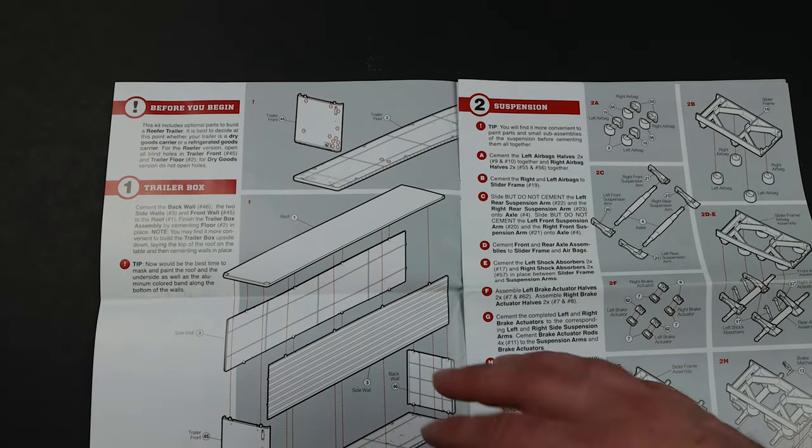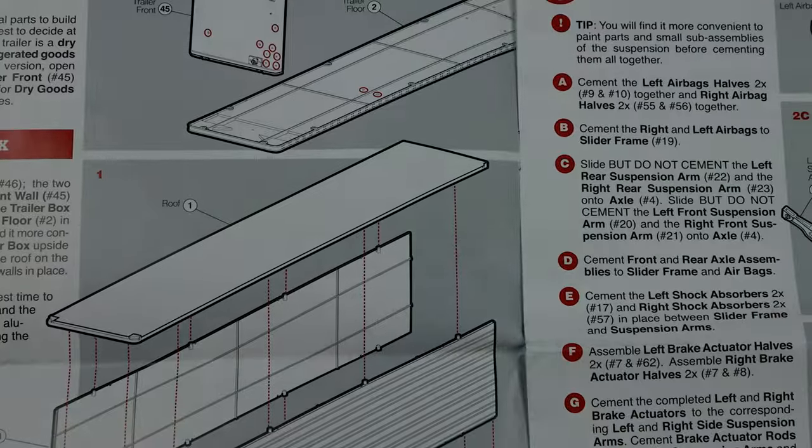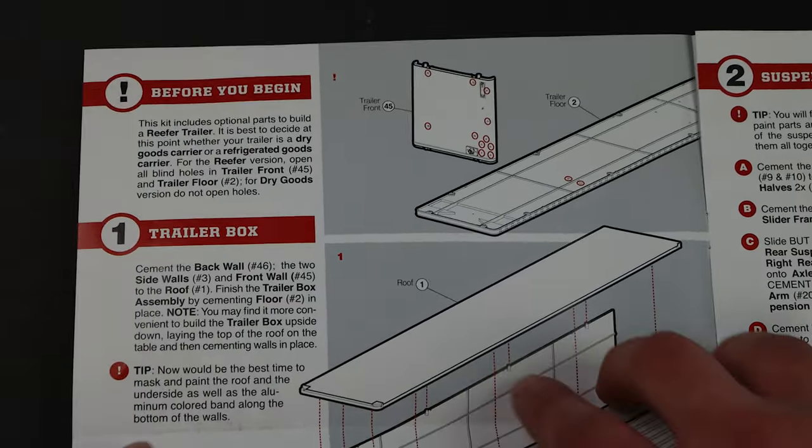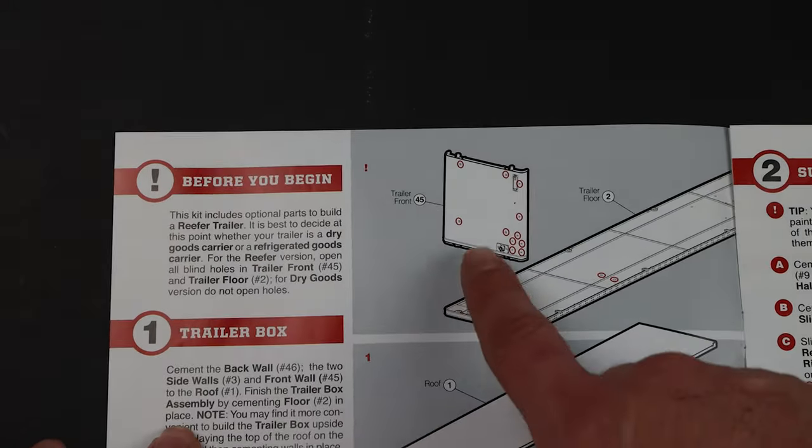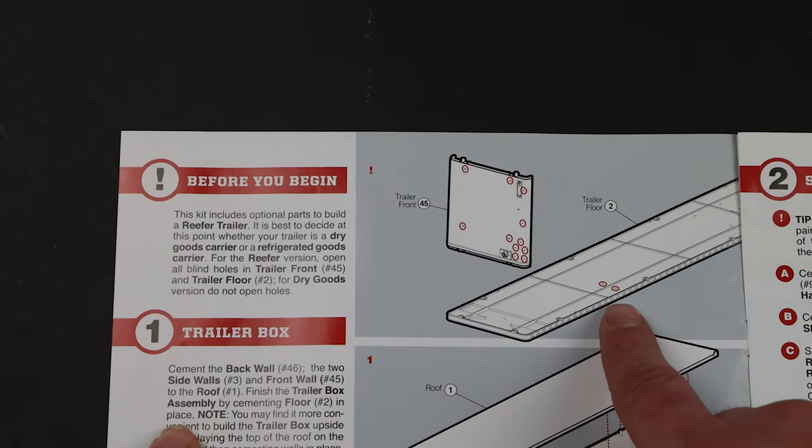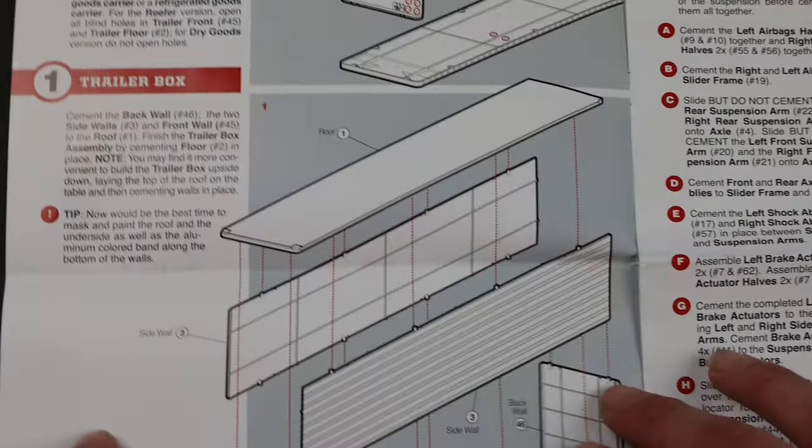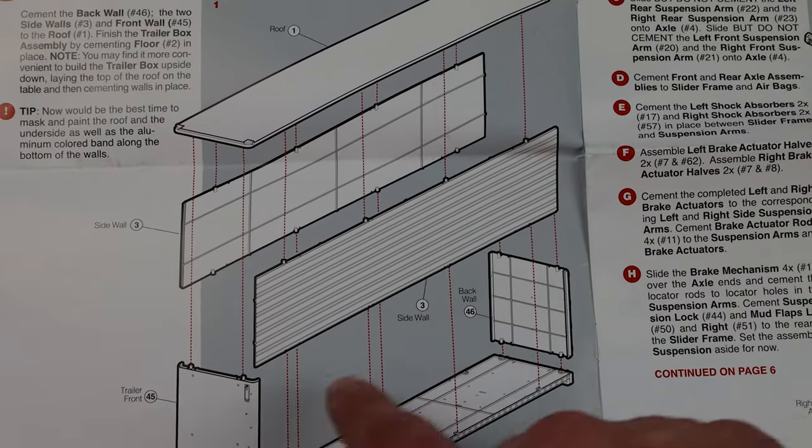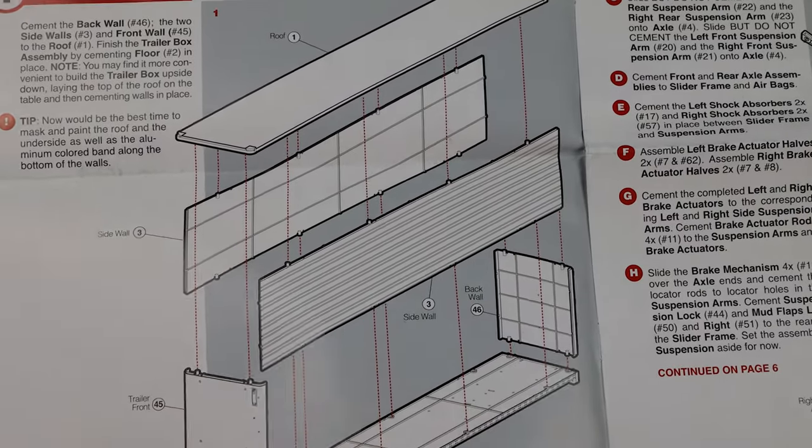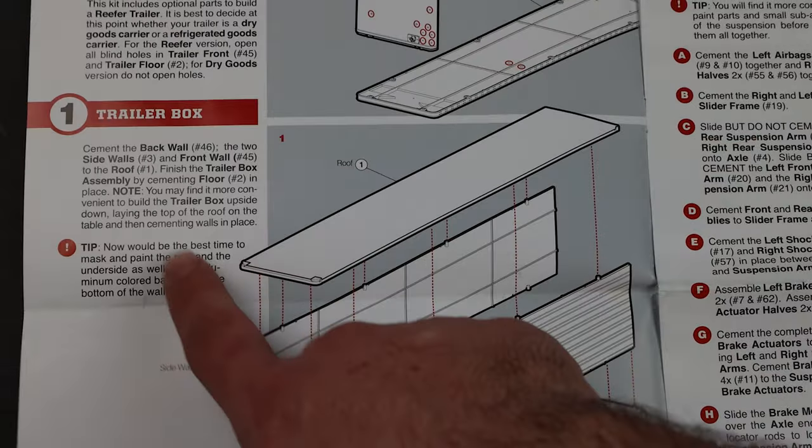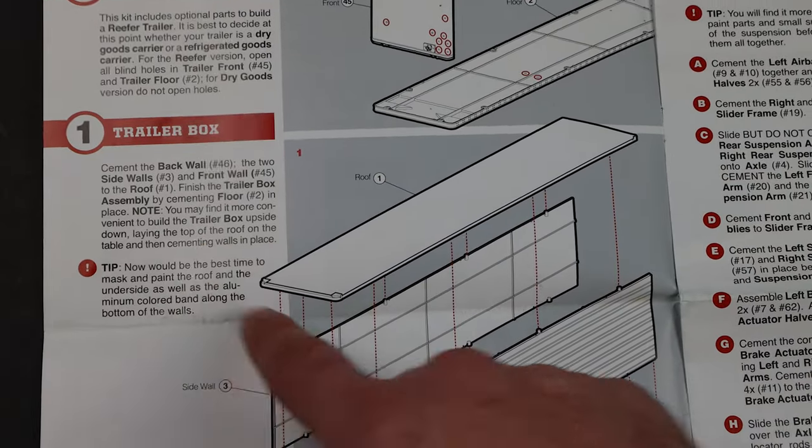Construction of it fairly simple. Let me zoom you in a little bit more so you can see. Start off by opening up some holes on the end plate and the bottom if you're going to do the reefer option, as well as for where the fuel tank goes. From there, you put on the ends, the sides, and the top. Fairly simple. Gives you part numbers on that. They also give you a little bit of text on what's going on in each step.